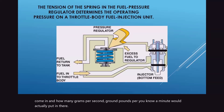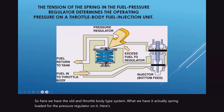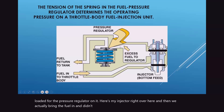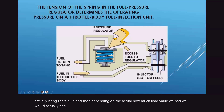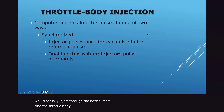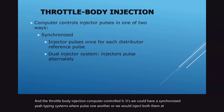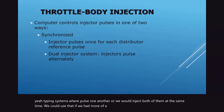Here we have the old throttle body type system where it's spring-loaded for the pressure regulator. Here's the injector, and depending on the load value we inject through the nozzle itself. The throttle body injection was computer controlled — we could have a synchronized type where it pulses injectors one at a time, or inject both at the same time if we needed more fuel. Non-synchronized injectors pulse once during a given period.